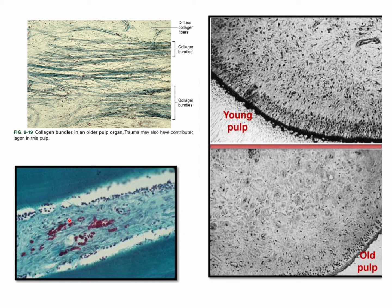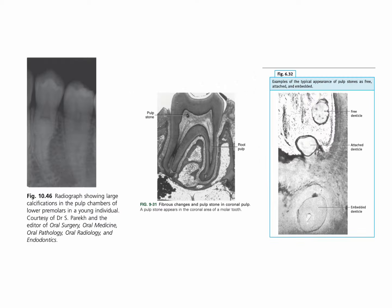Calcifications are seen inside the pulp. Let's take a closer look at these changes and these calcifications that happen inside the dental pulp — the false and the true denticles.